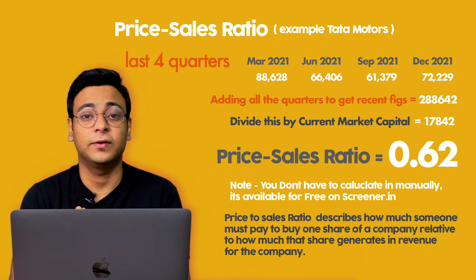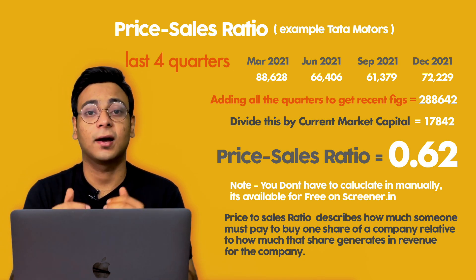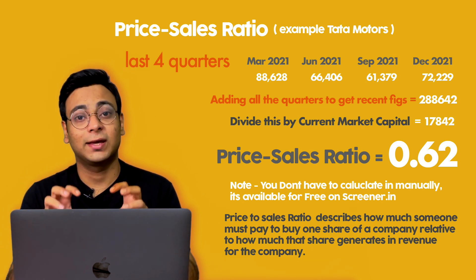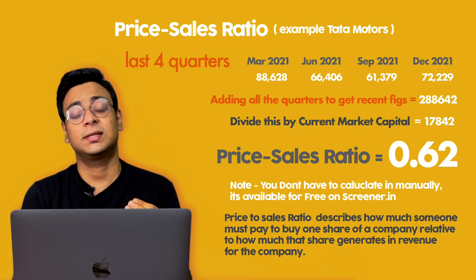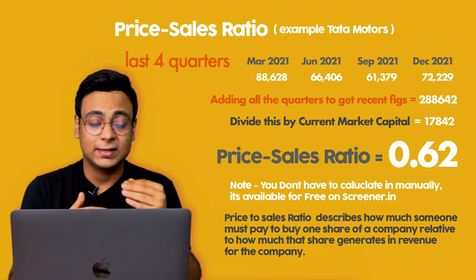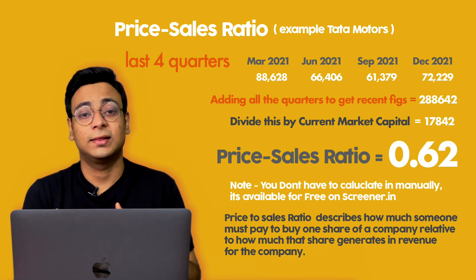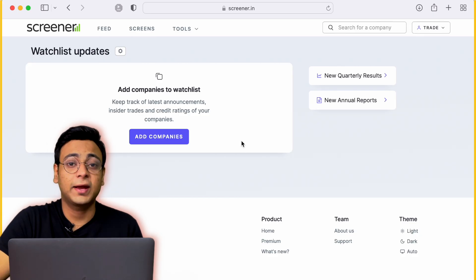Let me show you a few examples, but first let's talk about the Price-to-Sales model. The Price-to-Sales model works on one basic ratio: the Price-to-Sales ratio. The calculation is simple — take the last four quarters of sales from the current quarter and divide by the current market capitalization. This ratio tells us what price the company is trading at in comparison to its sales — whether it's trading at a higher premium.